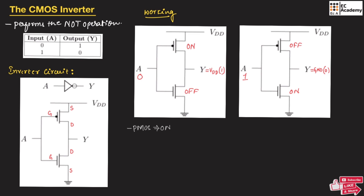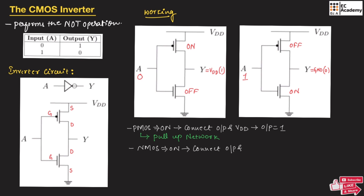When PMOS is on, the PMOS transistor will connect the output to VDD, so the output will be equal to 1. That is why the PMOS in a CMOS inverter is known as the pull-up network. When NMOS is on, it will connect the output to ground, which is VSS, so the output will be equal to 0. That is why the NMOS in a CMOS inverter is known as the pull-down network. The pull-up network pushes the signal to a high value and the pull-down network pulls the signal to a low value.